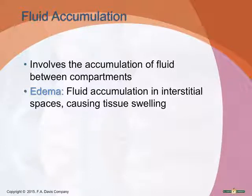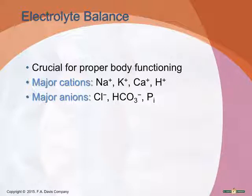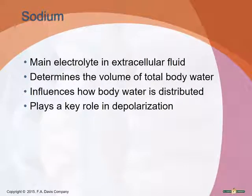A disturbance in factors regulating fluid movement between blood and the interstitial compartment — like electrolyte imbalances, increased capillary pressure, and decreased plasma protein concentration — can trigger edema. Electrolytes drive chemical reactions, affect the distribution of body water, and determine a cell's electrical potential. The major cations are sodium, potassium, calcium, and hydrogen. The anions — negatively charged — are chloride, bicarbonate, and phosphates, which are also important to acid-base balance.